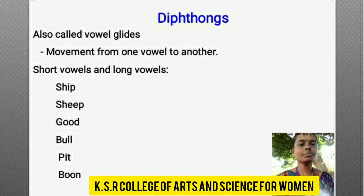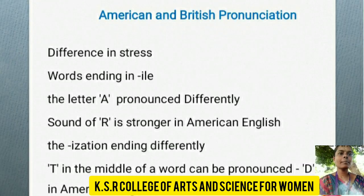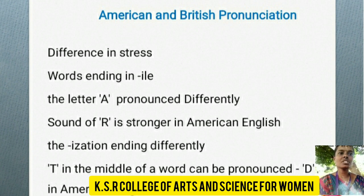Examples of short and long vowels: ship, shape, good, bull, pit. Next, we are going to see about American and British pronunciation. It differs in stress and words ending in I, L, E. The letter A is pronounced differently, and the sound of R is stronger in American English.